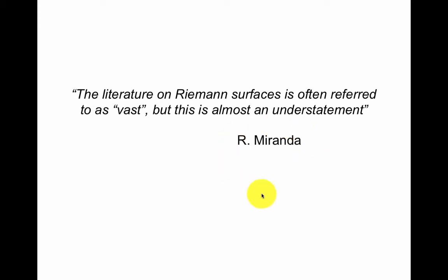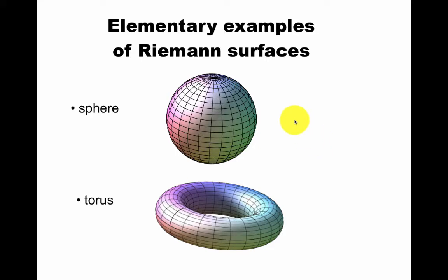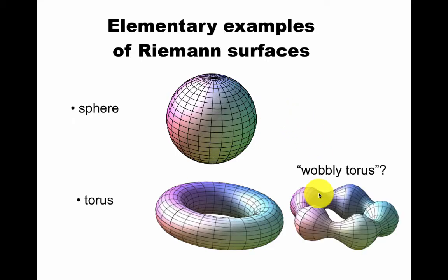One nice book is by Miranda, that is much deeper than what I will do here. Here we'll do some very simple basic statements. So a sphere is a Riemann surface. It needs to have some complex structure to it. For example, what about the wobbly torus? If you deform the torus, is this a Riemann surface?